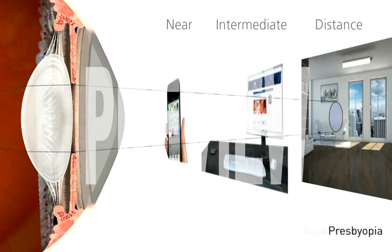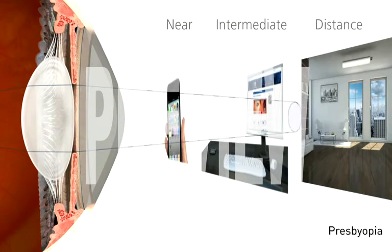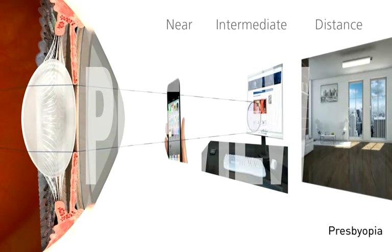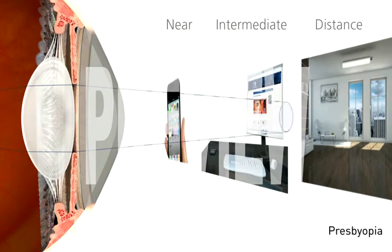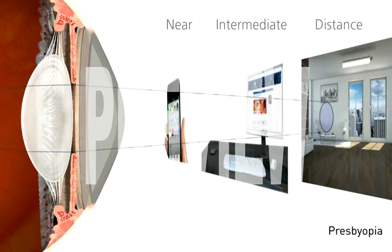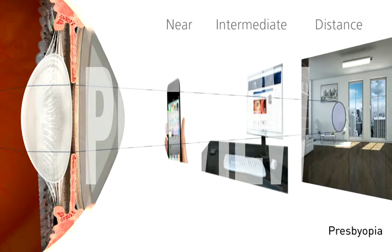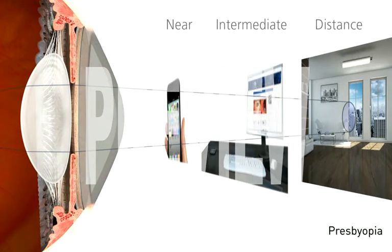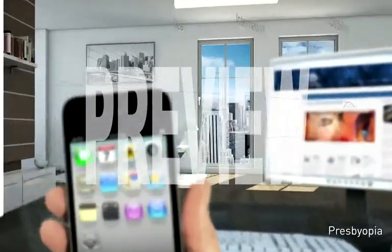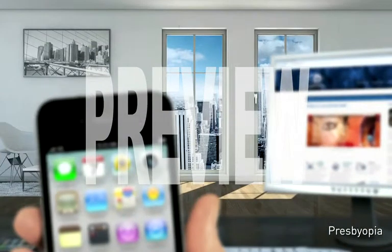Around the age of 40, a condition known as presbyopia develops when we lose the ability to change the shape of the lens inside the eye. As this occurs, we become more and more dependent on reading glasses to see close objects.